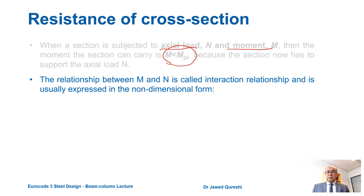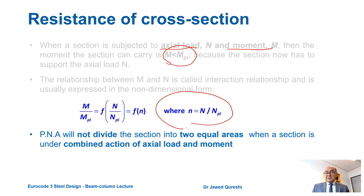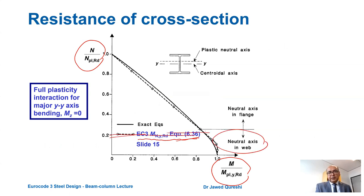The relationship between moment and axial load is expressed in non-dimensional form: m over Mpl equals f(n over Npl), where n equals N over Npl. The plastic neutral axis no longer divides the section into two equal areas under combined axial load and moment. Using the Eurocode 3 equation for reduced moment capacity when the neutral axis is in the web, you can find the ratio n/Npl and m/Mpl. The section is under full plasticity and major axis bending is occurring; minor axis bending is zero.